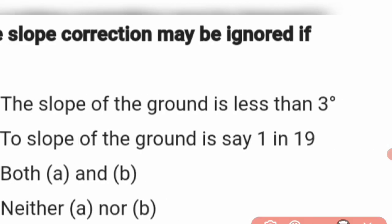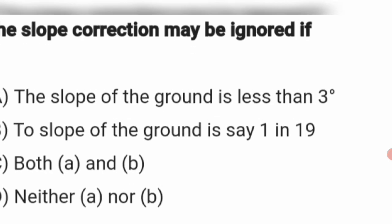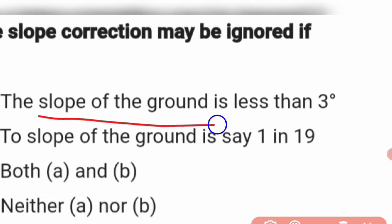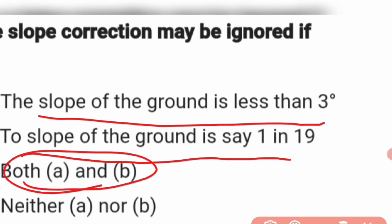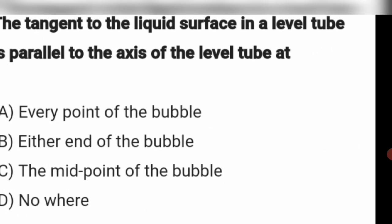Next question: The slope correction may be ignored if the slope of the ground is less than 3 degrees, or if the slope of the ground is 1 in 19, or both A and B. The answer is both A and B — slope less than 3 degrees or slope 1 in 19. Option C is the right answer.